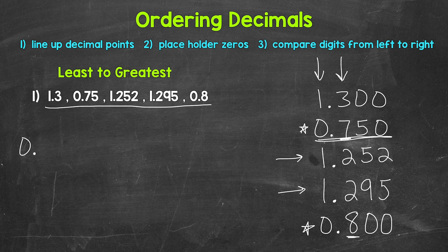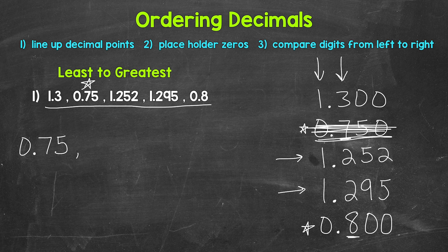So let's write 75 hundredths first. I wrote the decimal from the original list — 75 hundredths — not the equivalent decimal with the placeholder zero, seven hundred fifty thousandths. Those are equivalent, so either will work, but I'm going from the original list. Then we can put a comma and cross this off. Another way to think about this: we can think in terms of the entire decimal part — seven hundred fifty thousandths compared to eight hundred thousandths. Seven hundred fifty thousandths is less than eight hundred thousandths.